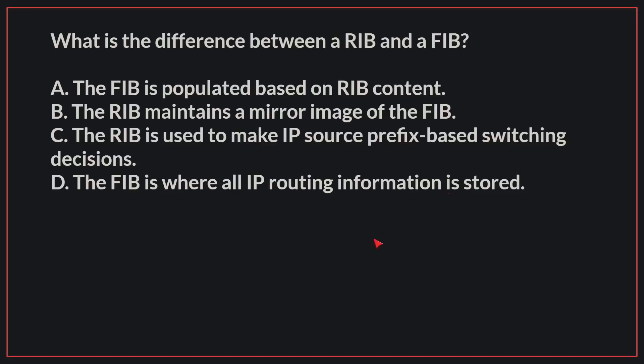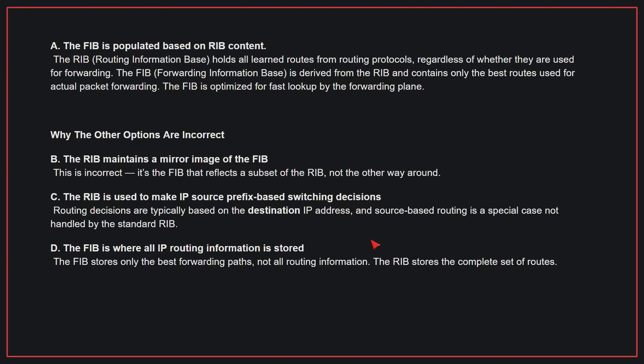The correct answer is A. The RIB holds all learned routes from routing protocols, regardless of whether they are used for forwarding. The FIB is derived from the RIB and contains only the best routes used for actual packet forwarding. The FIB is optimized for fast lookup by the forwarding plane.